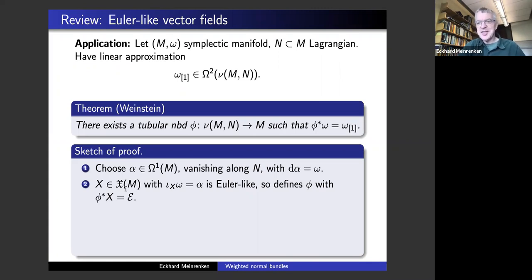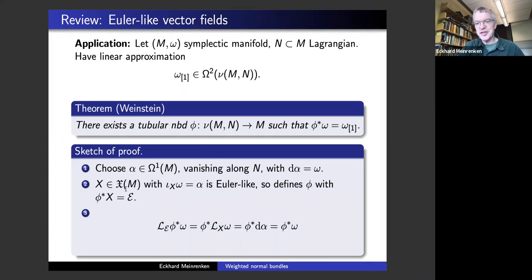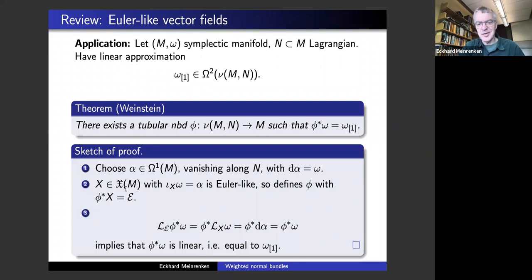At this stage you're basically done by the following calculation. You look at the Lie derivative of phi pullback omega under the Euler vector field. This is the same thing as the pullback of the Lie derivative of omega with respect to the Euler-like vector field. L_X omega, by definition of X, is d of alpha. And d of alpha by definition of alpha is omega. So this equation tells you phi pullback of omega is homogeneous of degree one — meaning it's linear, so it equals the linear approximation. Thus phi pullback of omega equals the linear approximation, and that's exactly what we want to prove. It's a very short proof of the Weinstein Lagrangian embedding theorem.